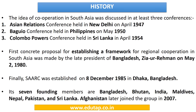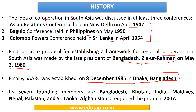The main idea of cooperation in South Asia was discussed in various conferences. You should have an idea of these conferences, where they were held and when. After a gap of around 26 years, President of Bangladesh, Zia-ur-Rahman, made a proposal for cooperation in South Asia on 2nd May 1980, and finally SAARC was established on 8th December 1985 in Dhaka, Bangladesh. Very importantly, there were seven founding members of SAARC, and Afghanistan joined the group later in 2007.